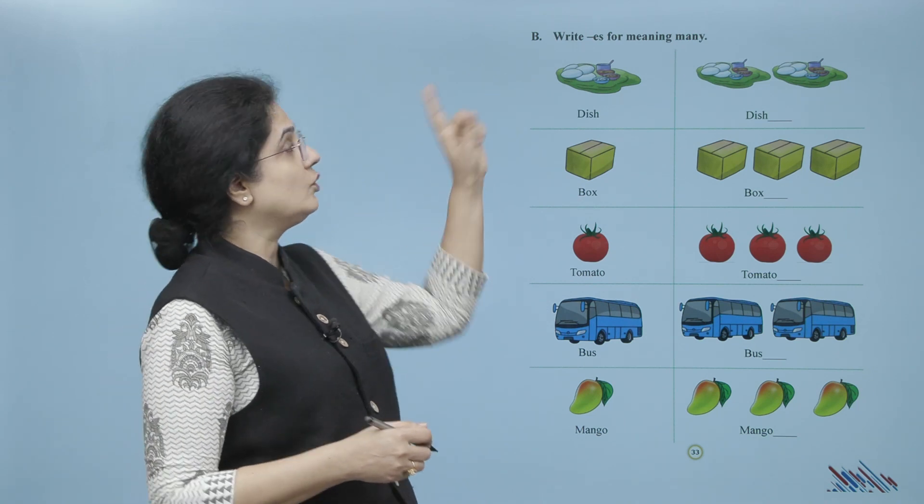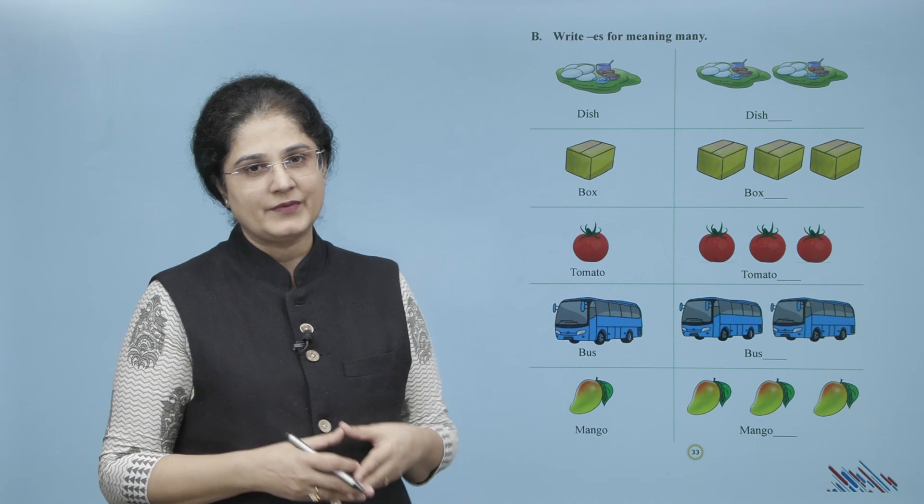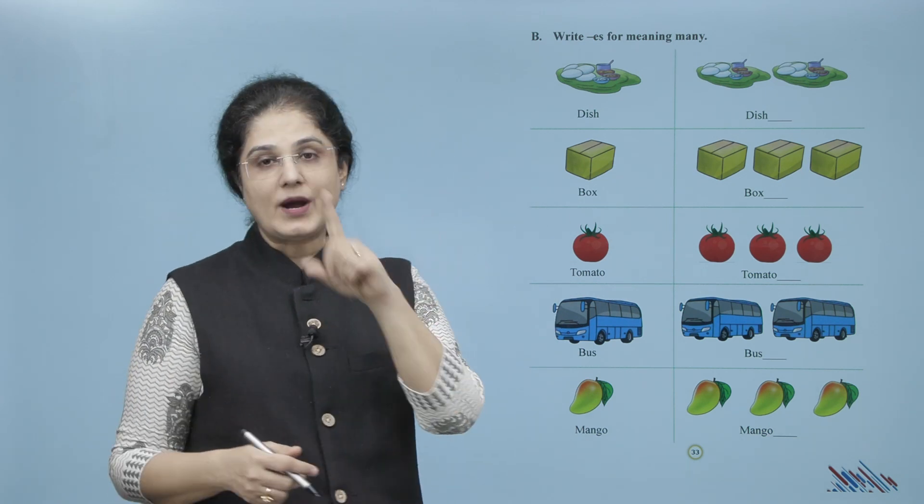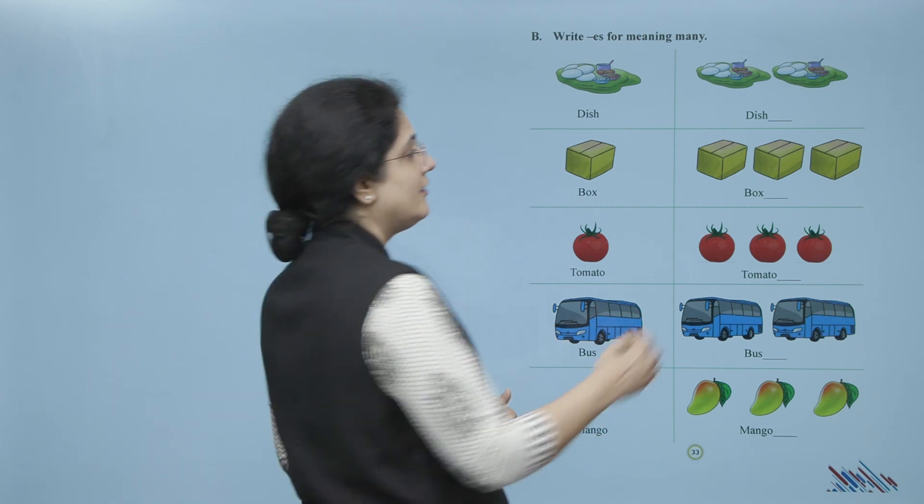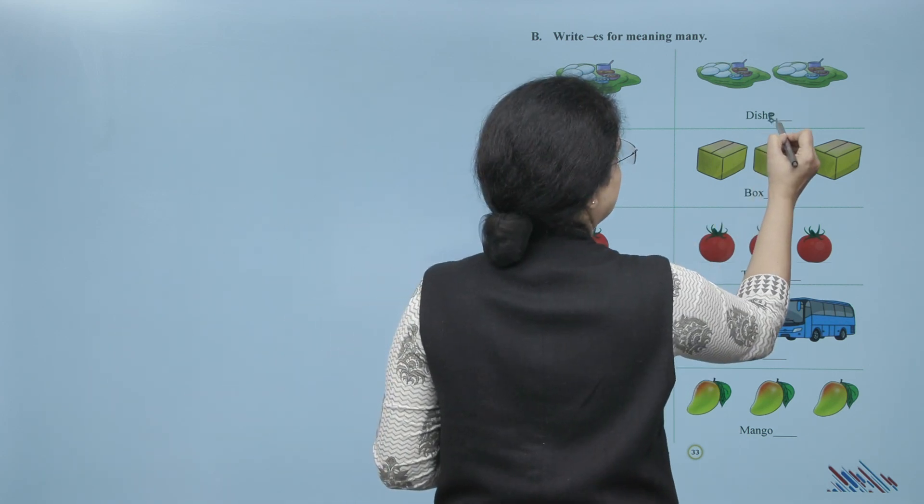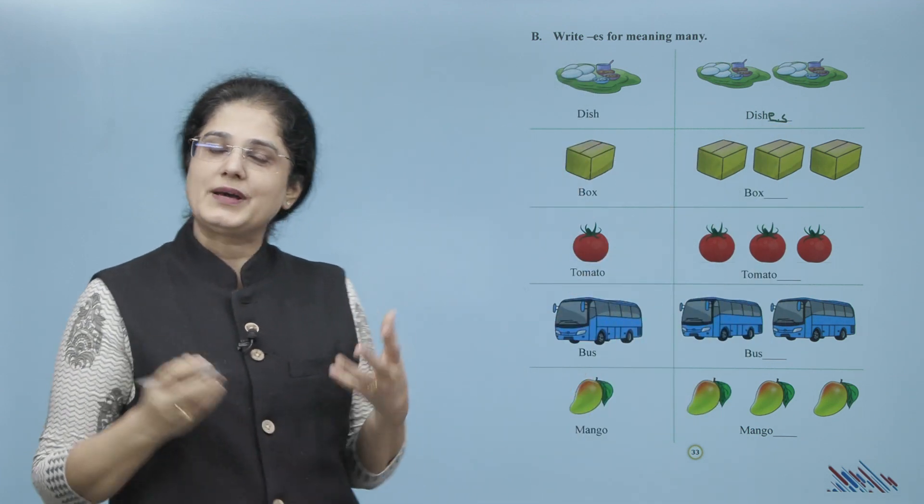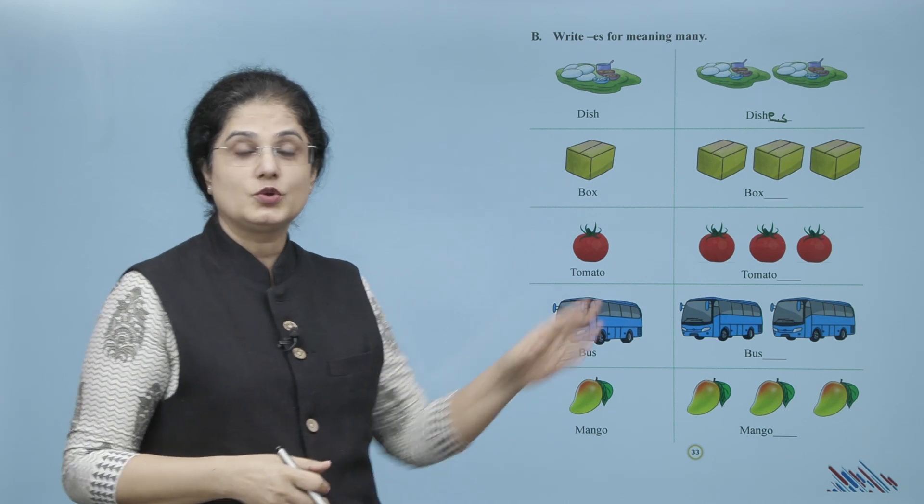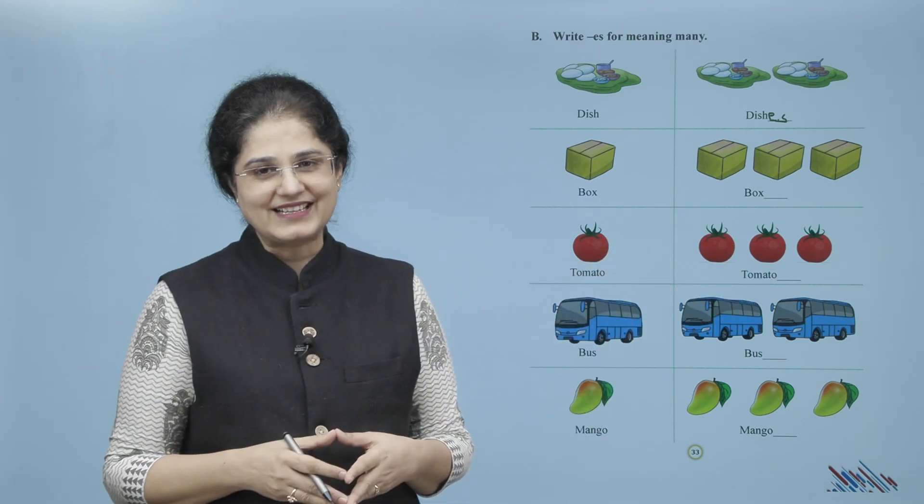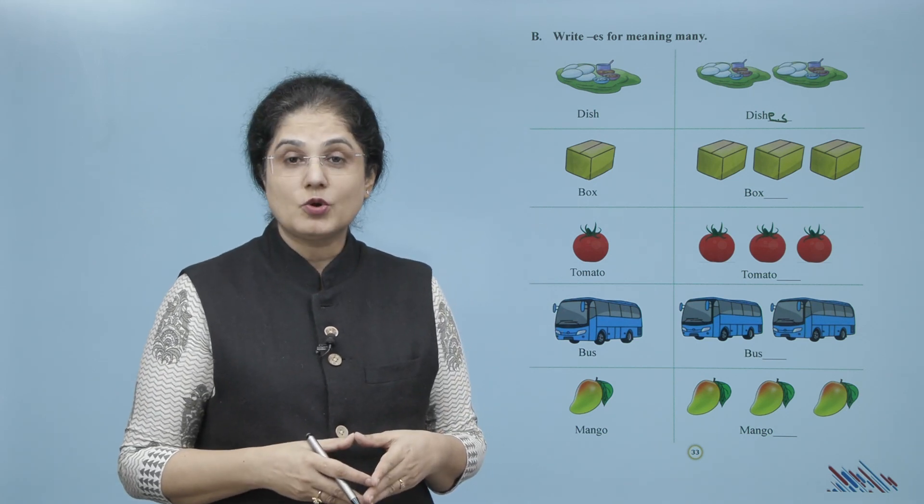Now we have to write ES for meaning many. Ab yahaan pe kya hai? One dish. Ab many dishes ke liye hamne kya karna hai? We have to add E and S, to ban gaya dishes. Similarly we have box, to boxes ke liye kya karna hai? ES add karna hai.